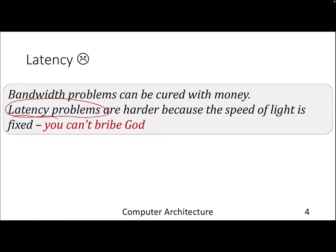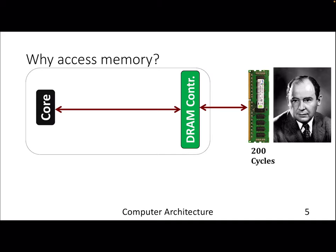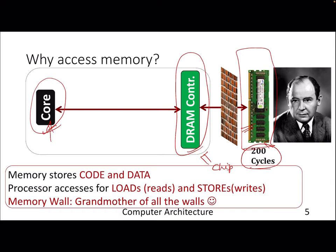In general, latency problems are harder in any systems field — OS, networking, architecture, or anything. Why do we access memory? This is the bigger von Neumann bottleneck discussed in the first month: data and code are stored in memory. In current processors, there is something called a memory controller or DRAM controller on-chip. In any recent commercial chip from Intel or AMD, along with the processor pipeline, the DRAM controller is also present inside the chip.